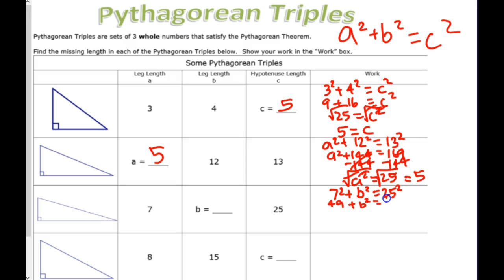49 plus B squared. 25 squared. 625. Again, B is not alone.